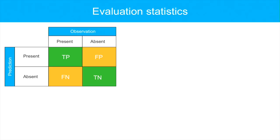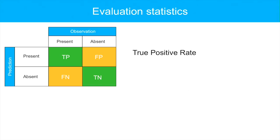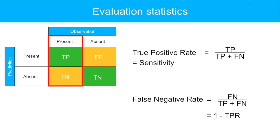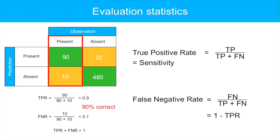Therefore, other evaluation statistics used more often are the true and false positive rate and the true and false negative rate. The true positive rate refers to the proportion of observed presences that are correctly predicted, calculated as the number of true positives divided by the sum of true positives and false negatives. The true positive rate is often named sensitivity, and a high value indicates good model performance. In this example, the true positive rate is 0.9, meaning the false negative rate is 0.1 — so 90% of the observed presences are correctly predicted. Note that these two statistics can be calculated if you only have presence data.